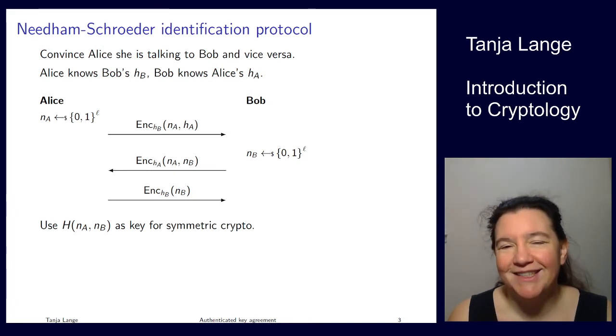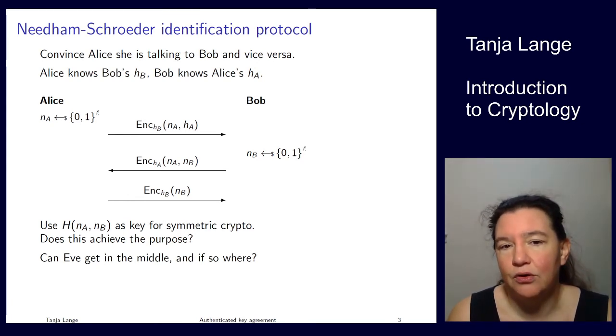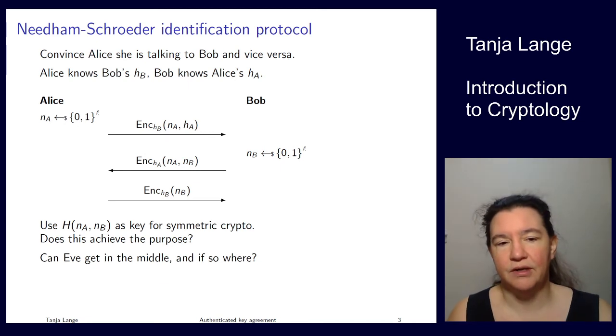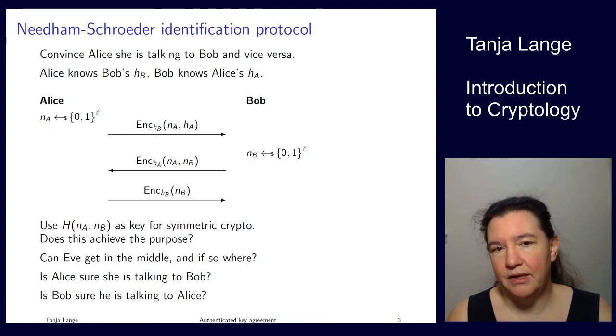This will be important on the next slide, because we're trying to get Eve in the middle, of course. So first the question, does this actually achieve the purpose? I was saying optimistically, at this point Alice is convinced she's talking to Bob. Bob is convinced he's talking to Alice. But can Eve get in the middle? Can she somehow interfere with this? Can she still talk to Alice and to Bob, making them believe they're talking to each other? So is Alice actually sure she's talking to Bob? Is Bob sure he's talking to Alice?